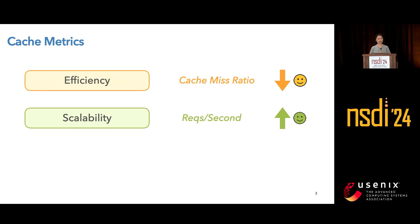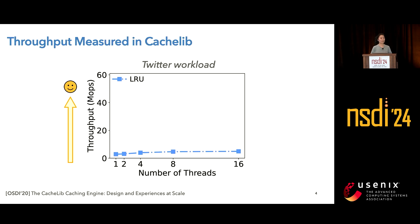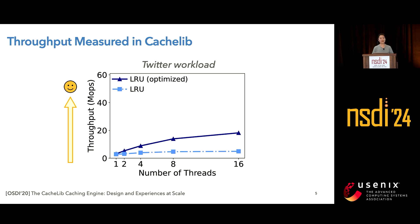But many efficient eviction algorithms fail to achieve good scalability. We measured the throughput of LRU implemented in CacheLib with a Twitter production workload. LRU is widely adopted in production systems, and CacheLib is a general purpose caching engine developed by Meta. The blue dotted line shows how the throughput of LRU scales with an increasing number of threads — it is relatively flat, indicating that despite adding more threads, the throughput does not increase. This suggests that the standard LRU algorithm does not scale well. Meta engineers actually spent a lot of effort optimizing LRU to improve scalability, as shown in the solid dark blue line.